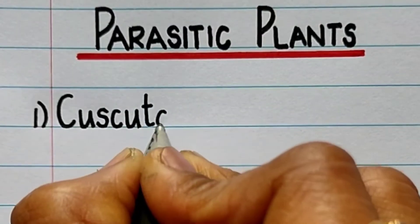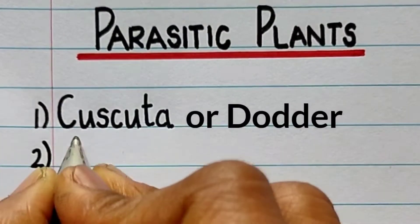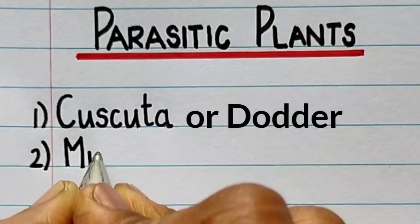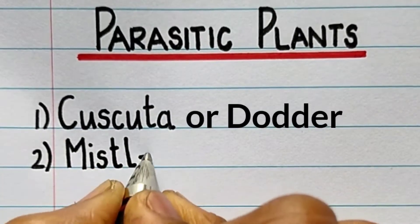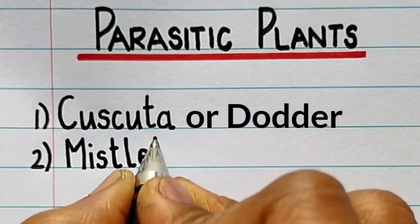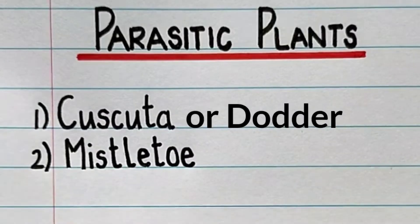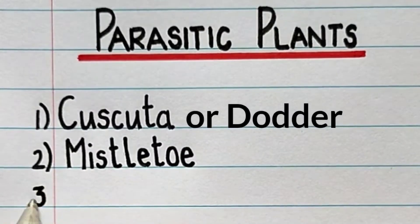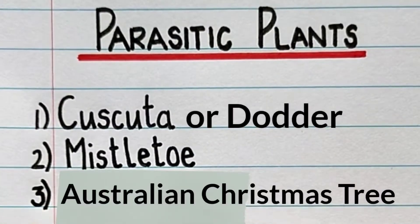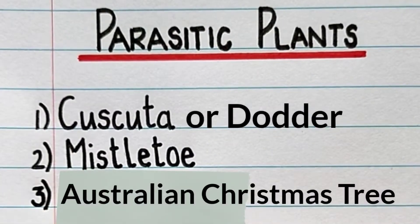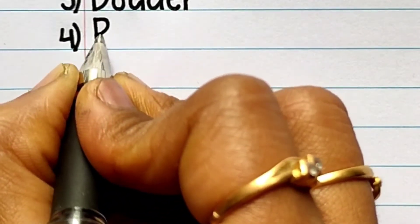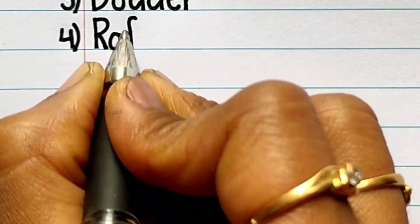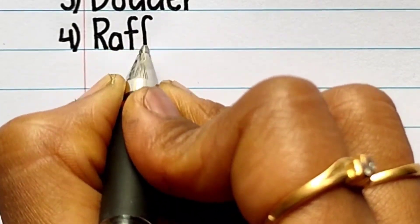The first one is Cascuta or Dodder. The second one is Mistletoe, spelled M-I-S-T-L-E-T-O-E. The third one is Australian Christmas Tree. The fourth one is Rafflesia.